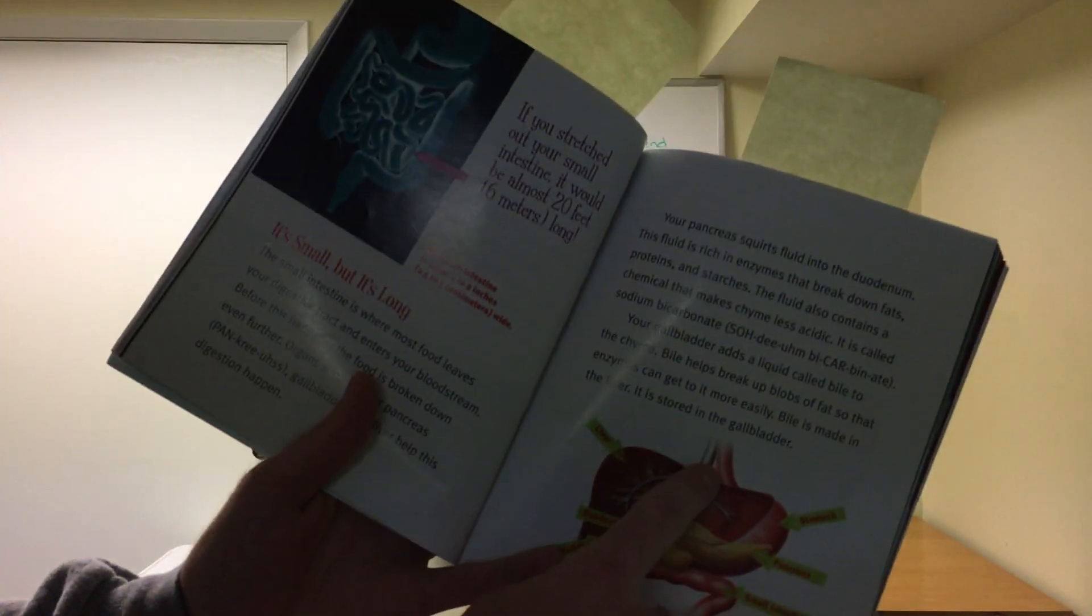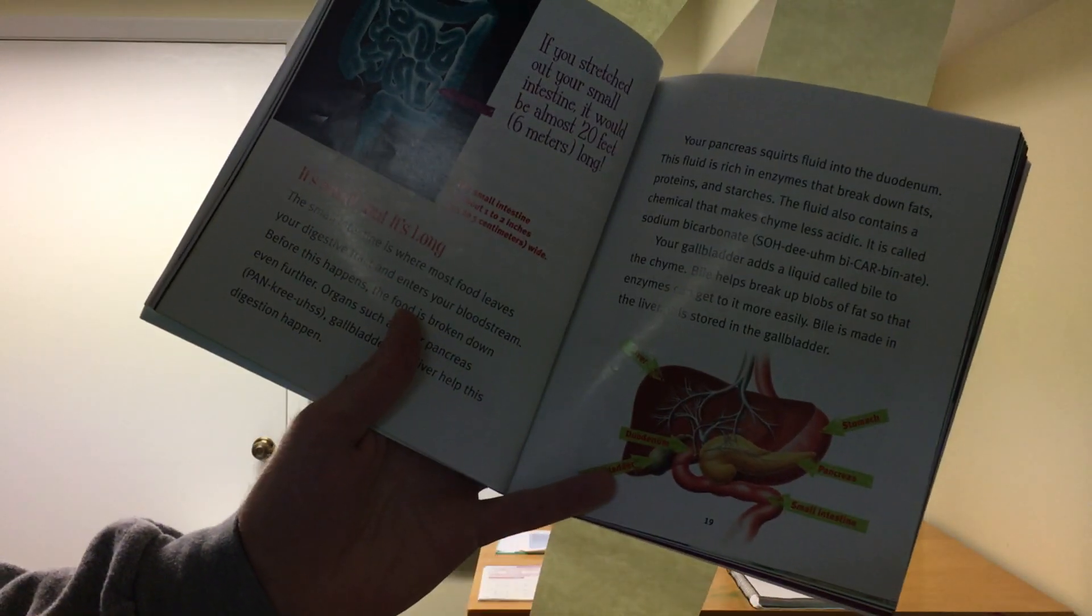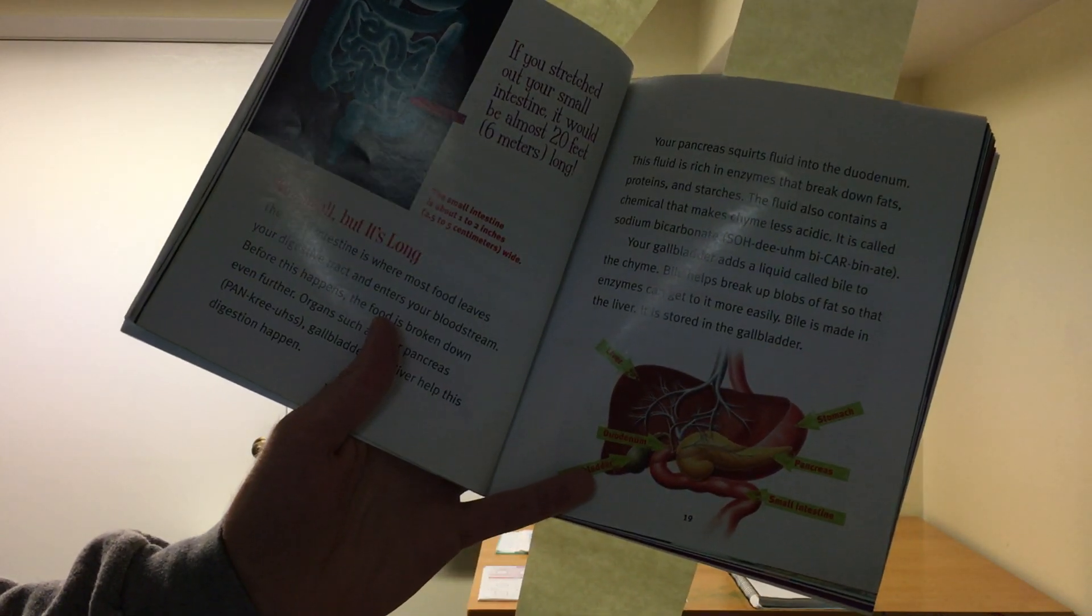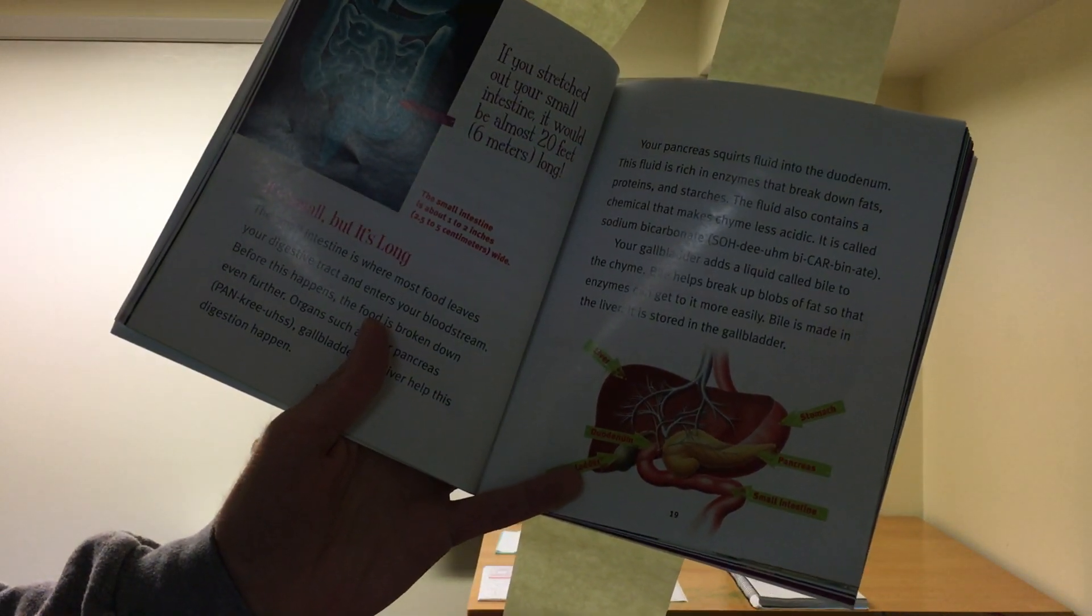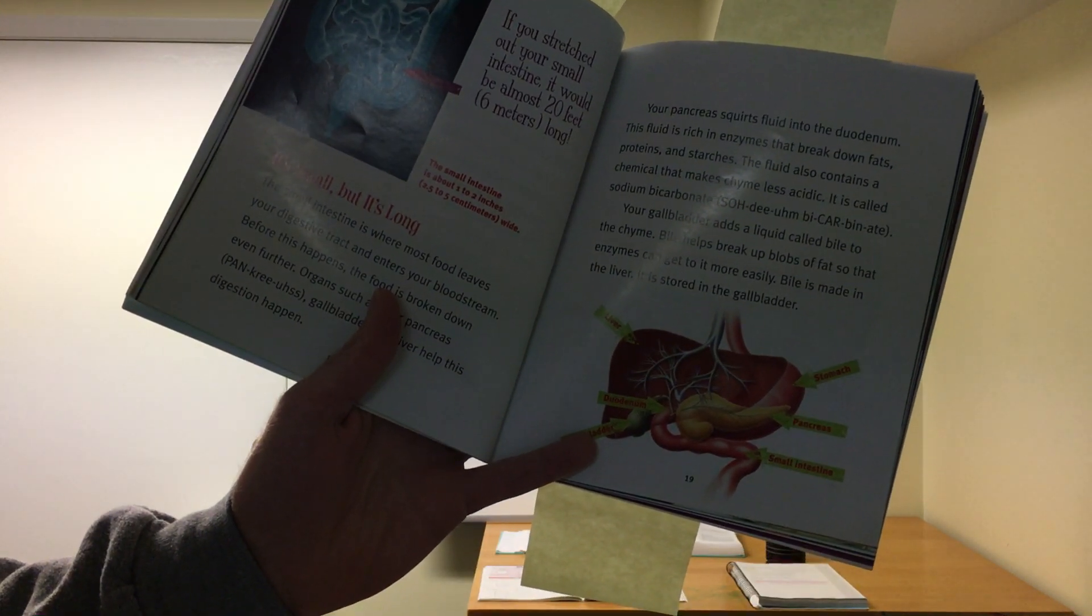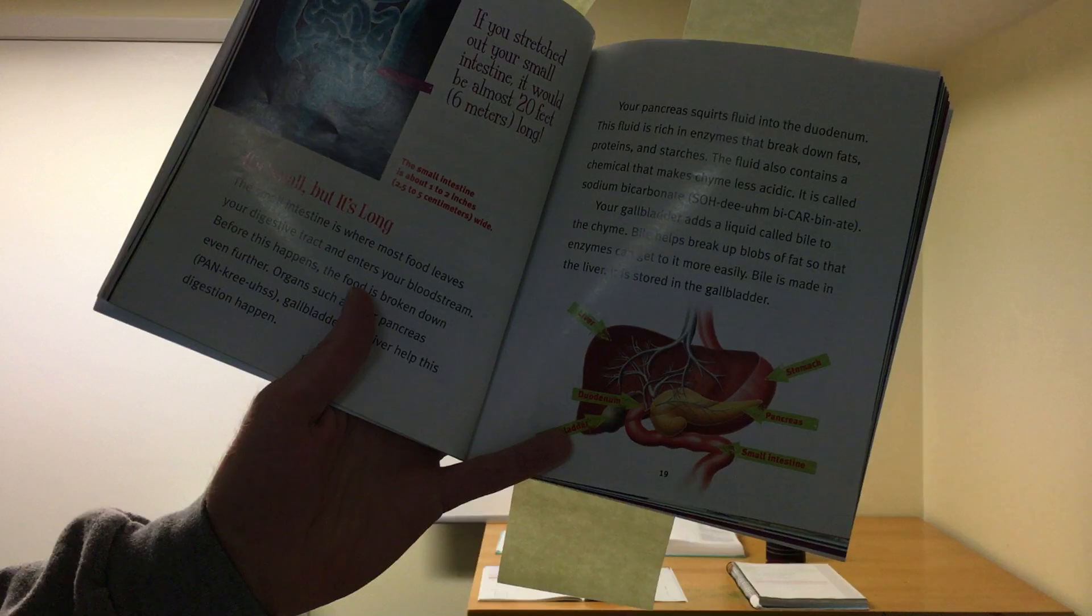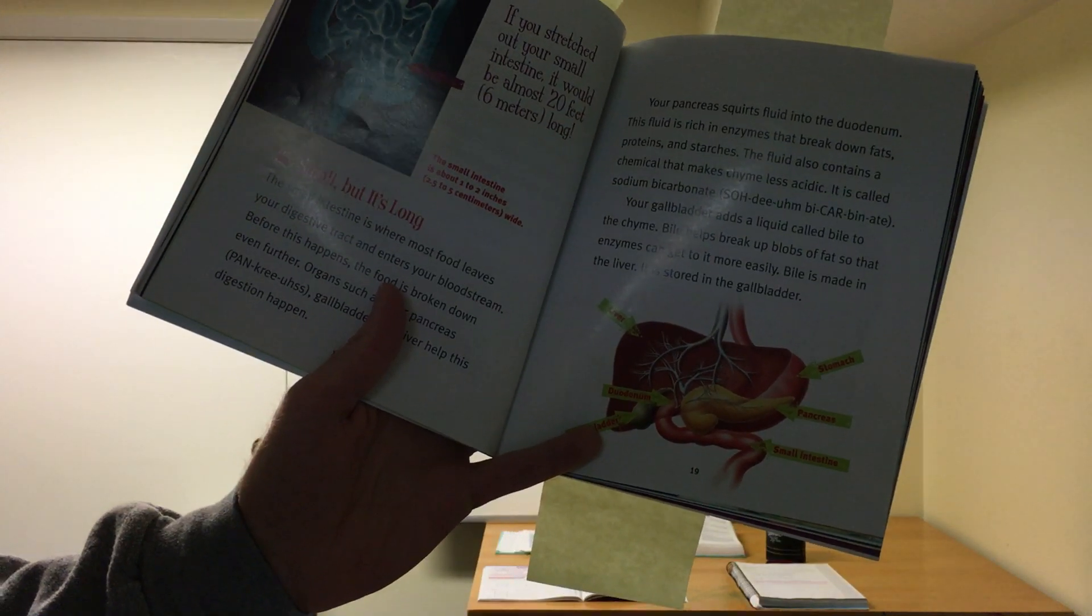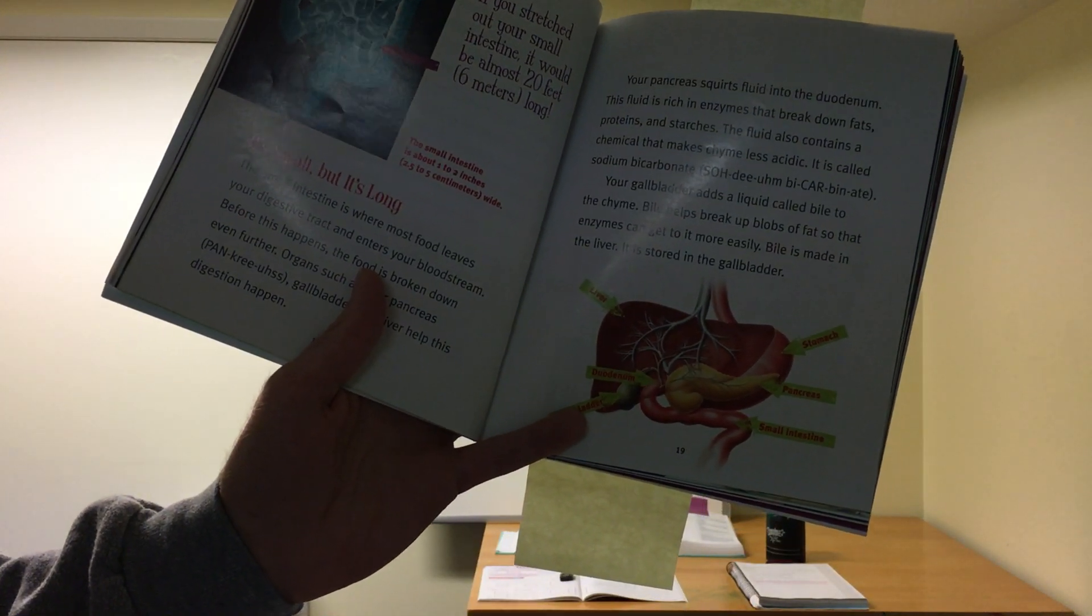Your pancreas squirts fluid into the duodenum. This fluid is rich in enzymes that break down fats, proteins, and starches. The fluid also contains a chemical that makes chyme less acidic. It's called sodium bicarbonate. Oh my goodness.